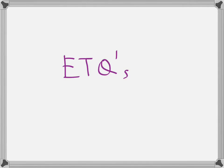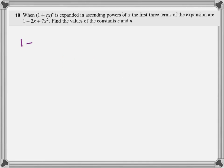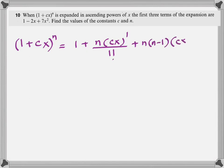Some ETQs, exam type questions. Look at this one. When (1 + Cx)^n is expanded in ascending powers of x, the first three terms are such and such. Find the value of the unknown constants. Take the binomial. Expand without looking at the answer. The first three terms. And, then, since you have two unknowns, you will be forming two simultaneous equations. Basically, it's comparing coefficient.